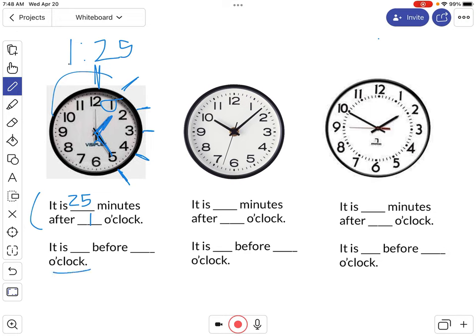How about this next question here? It is blank before blank o'clock. This says before. Well, the hour that it's coming up on next is 2 o'clock because 2 comes after 1. So 2 is the next hour. And how many minutes is it until the next hour? Well, there are 60 minutes in an hour. And so far, 25 minutes have gone by. We can see that right here because it's 25 minutes after 1 o'clock. So if we subtract,